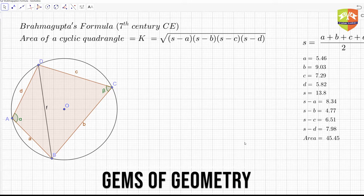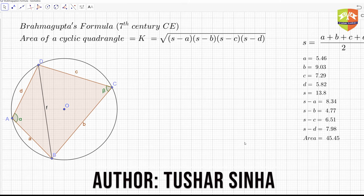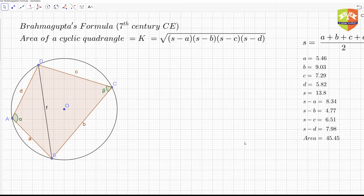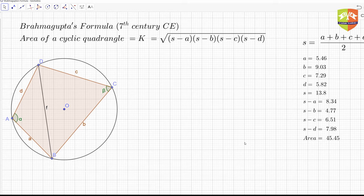Hello and welcome to another session on jumps of geometry. In the last session we tried to validate Brahmagupta's formula, which is a formula to calculate the area of a cyclic quadrilateral. The formula is K = √[(s−a)(s−b)(s−c)(s−d)], where s is the semi-perimeter — that is the sum of the four sides divided by two. That's what we validated in the previous video.